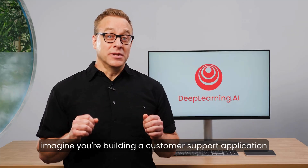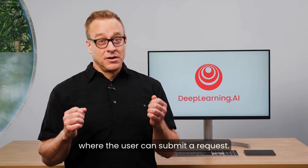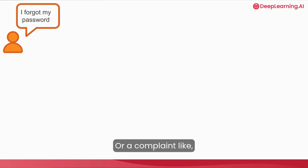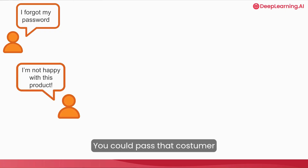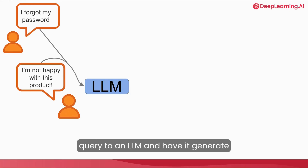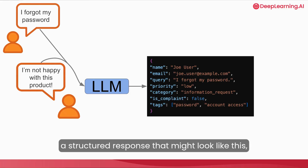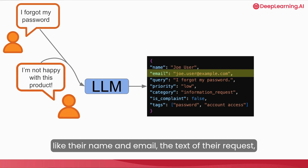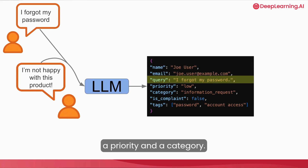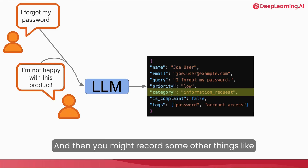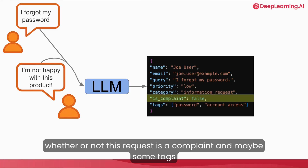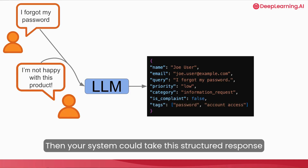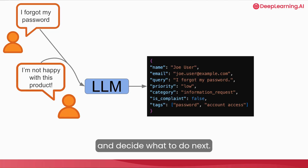For example, imagine you're building a customer support application where the user can submit a request — maybe something like 'I forgot my password,' or a complaint like 'I'm not happy with the product I bought.' You could pass that customer query to an LLM and have it generate a structured response that might look like this, where you have the user's information like their name and email, the text of their request, a priority and a category, whether or not the request is a complaint, and maybe some tags or keywords about the request. Then your system could take this structured response and decide what to do next.